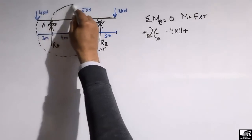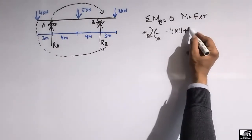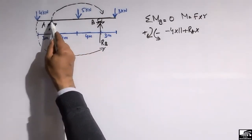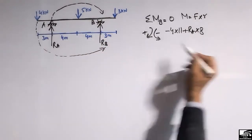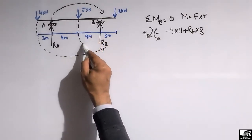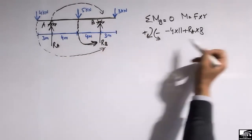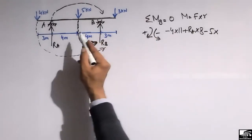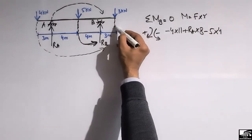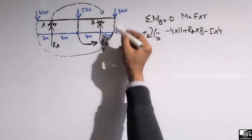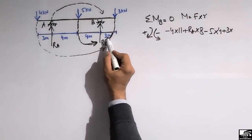RA acts upward and creates a clockwise moment about B, so it is positive: RA multiplied by its moment arm, which is 4 + 4 = 8 meters. The 5 kN force acts downward and creates an anti-clockwise moment, so it is minus 5 multiplied by its moment arm of 4 meters. The 3 kN force creates a clockwise moment about B, so it is positive: 3 multiplied by a moment arm of 3 meters.